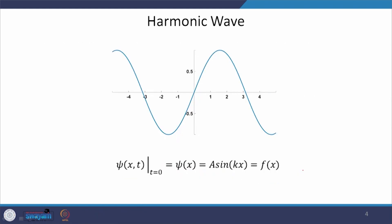Whenever we say wave, a sinusoidal harmonic wave comes to mind, and all types of waves are represented by some wave function ψ. This wave function ψ is a function of position variable x and time variable t. At t = 0, the wave function can be written as A sin(kx). A represents the amplitude. The insertion of k is necessary because x is a dimensional quantity — you cannot take sin of a dimensional variable.